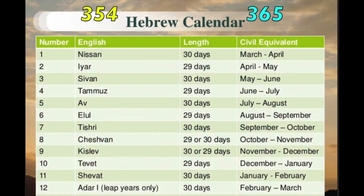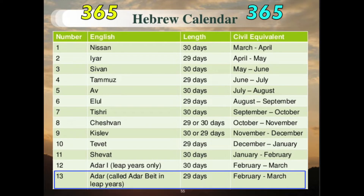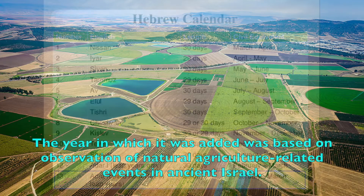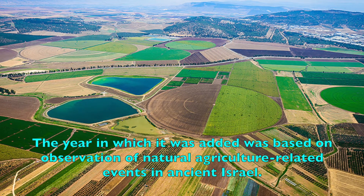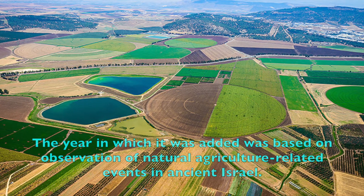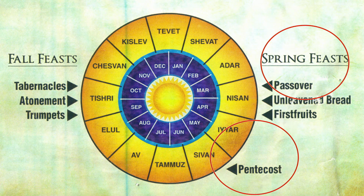The Hebrew lunar year has 354 days instead of 365, making every year shorter than the solar year or Gregorian calendar. Therefore, the Jewish calendar added one month every two or three years to correct for the difference between 12 lunar months and the solar year. The year in which it was added was based on observation of natural agriculture-related events in ancient Israel. This ensures that Passover remains a spring festival, Pentecost a harvest time, and Tabernacles during the fall.